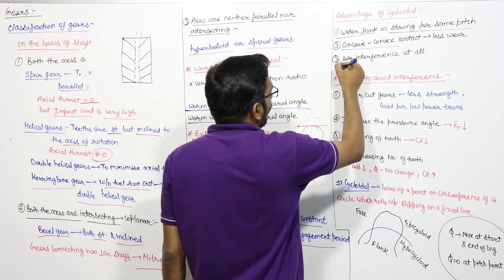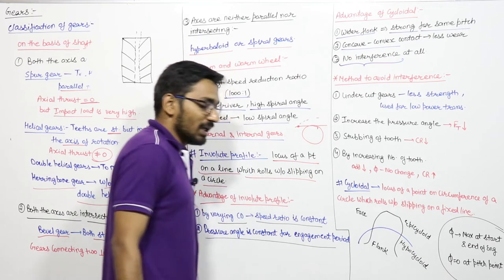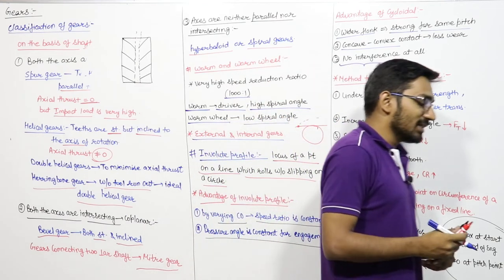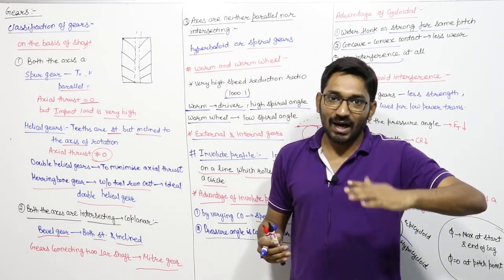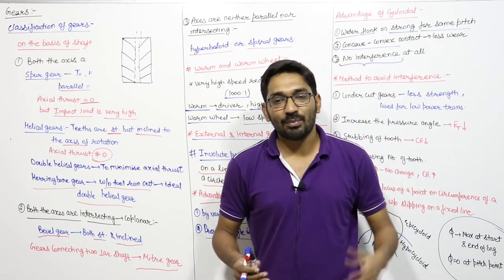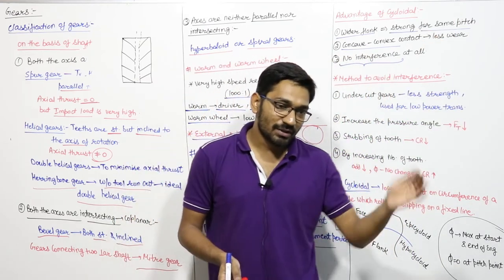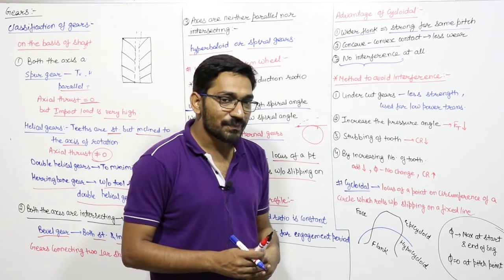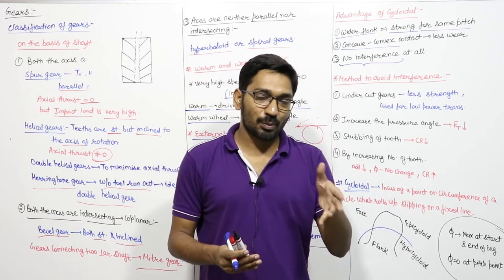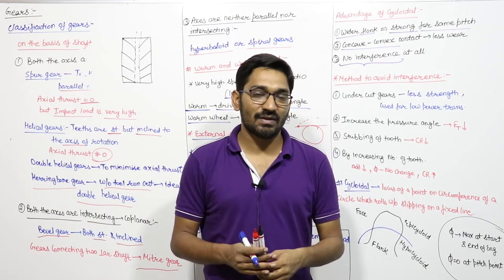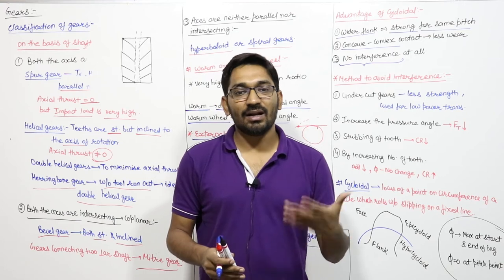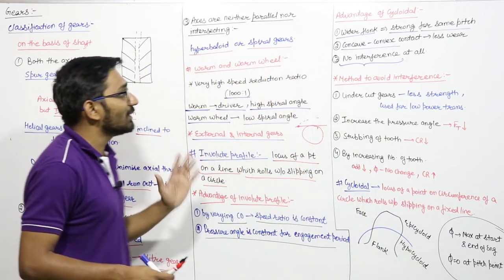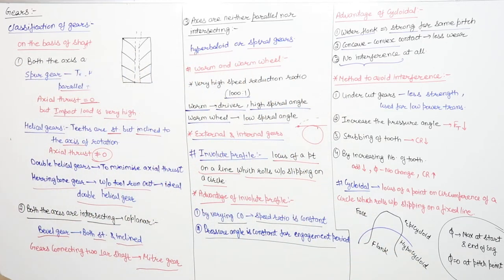The major advantage of cycloidal profile is that there is no interference at all. In cycloidal profile, both the profile above and below the base circle are conjugate. In involute profile, only the profile above the base circle is conjugate; below the base circle it is not. So if the point of contact goes below the base circle, interference occurs in involute, but never in cycloidal.